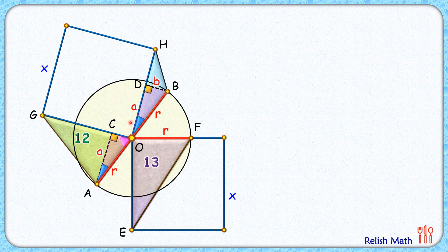From here we are getting the relation between a and b by applying Pythagorean theorem we are getting a² + b² = r².